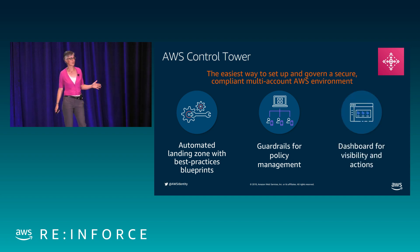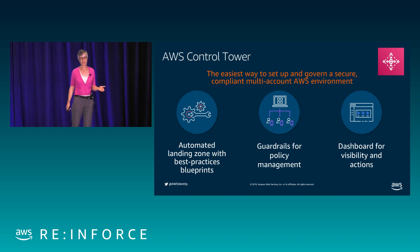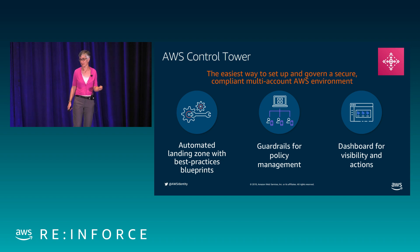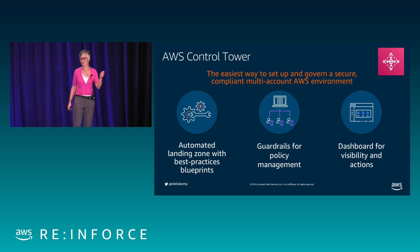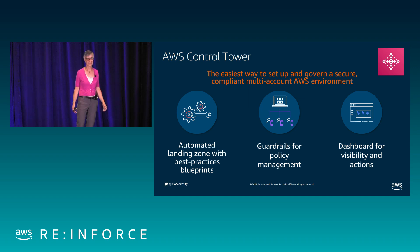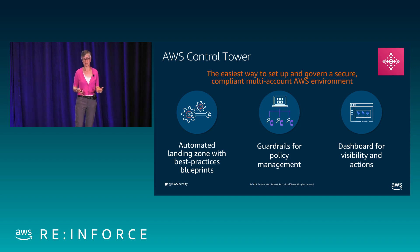Once you do that, here's what happens for your users. They come to a user portal where they first authenticate — either against your corporate directory or with the identity you created for them. From there, they can see the accounts and business applications they can access. If they click on a particular AWS account and one of the permission sets assigned to them, they can go straight into the management console, or retrieve credentials to operate in the command line or via APIs.